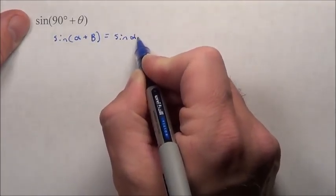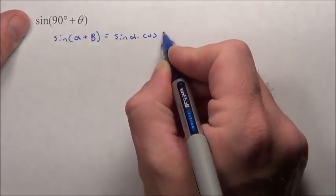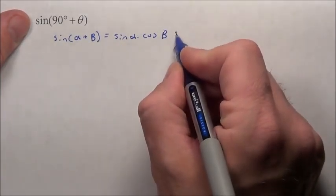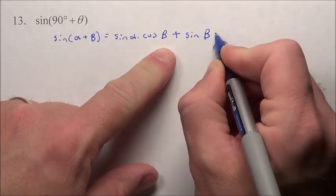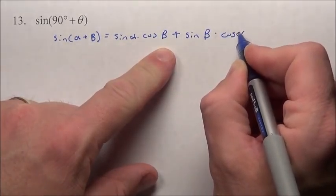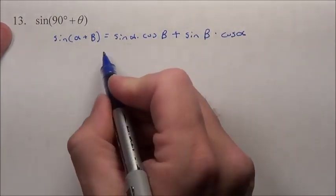the rule is, it's the sine of the alpha times the cosine of the beta, stays the same sine, sine of the beta times cosine of the alpha of the first piece. So we're just going to follow this rule.